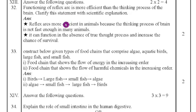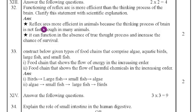Thirteenth main: answer the following questions. Thirty-second question: the functioning of the reflex arc is more efficient than the thinking process of the brain — clarify this with scientific explanation. The reflex arc is more efficient because the thinking process of the brain is not fast enough in many animals. It can function in the absence of a true thought process and increases the chances of survival.